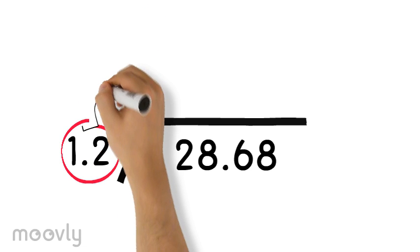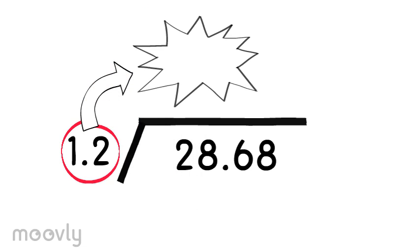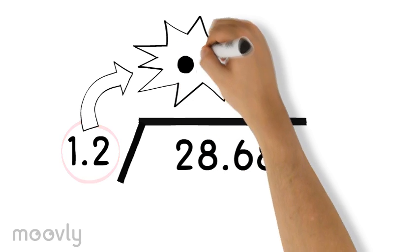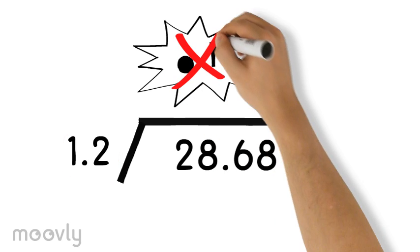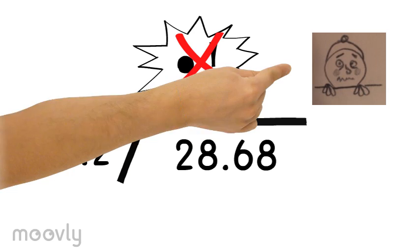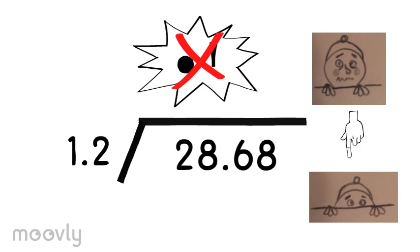Look at my divisor, a decimal can be confirmed. Decimals can't be outside, they get cold and want to hide.